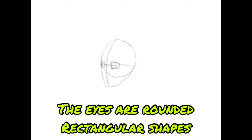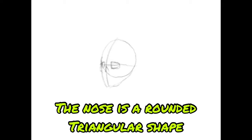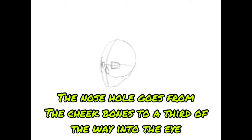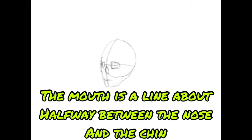The eyes are rounded rectangular shapes. The nose is a rounded triangular shape. The nose hole goes from the cheekbones to a third of the way through the eye. The mouth is a line about halfway between the nose and the chin.